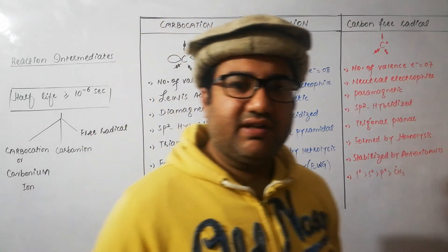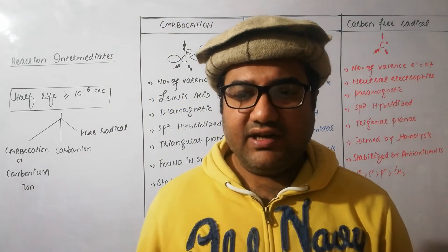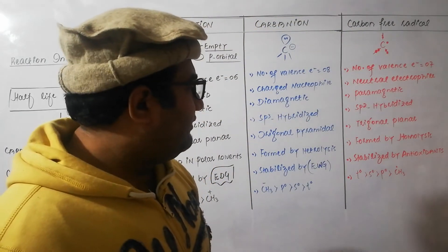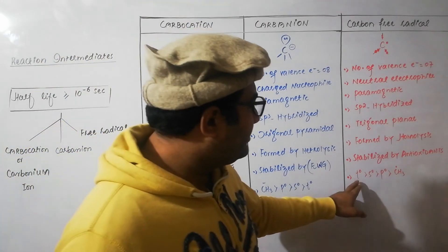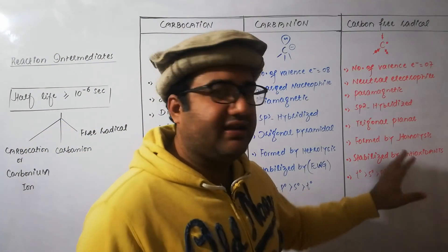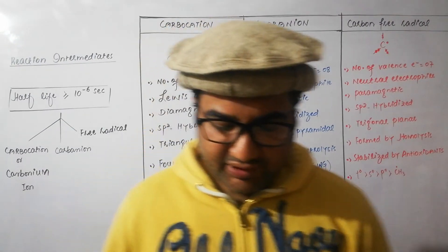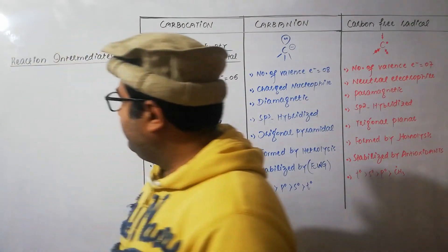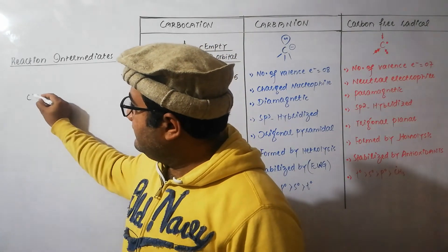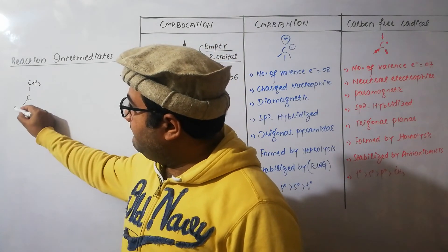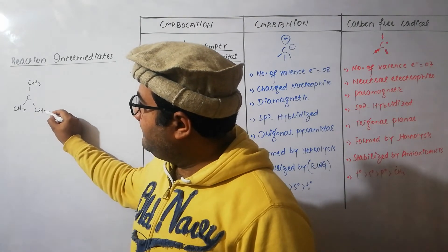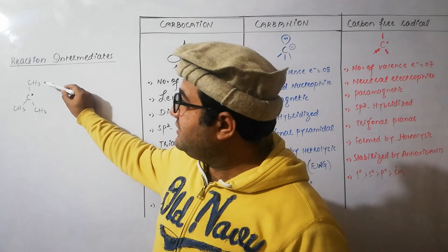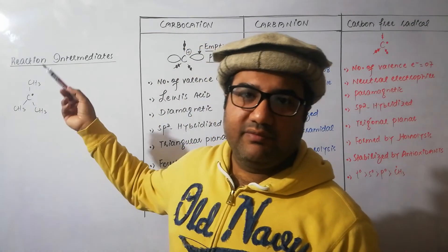Carbon free radicals are stabilized by antioxidants — species that share electrons with them. The stability order is: tertiary is more stable than secondary, then primary, then methyl free radical. For the tertiary carbon free radical, the single unpaired electron is not easy to approach because of the bulkier surrounding groups, so it will be more stable. If we make it secondary, the protection of this single electron is weaker, and it can be reached more easily, making it more reactive and less stable.